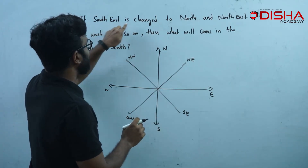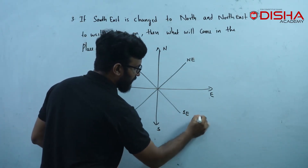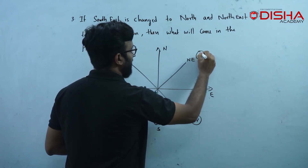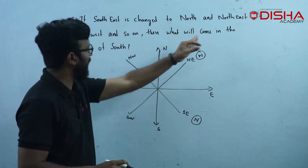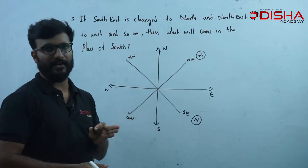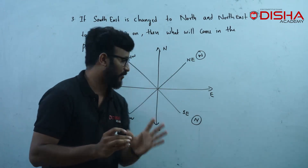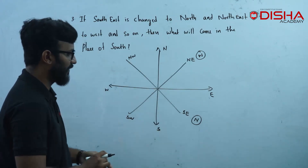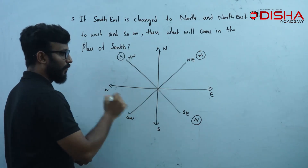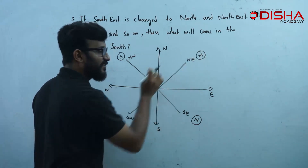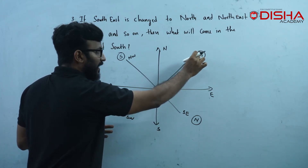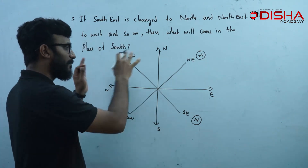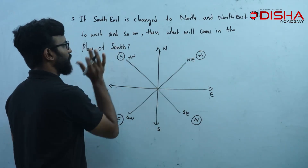Southeast is changed to North. Northeast is changed to West. What will come in the place of South? South is changed to North. Where is the opposite of North? South. Where is the opposite of West? East. So East is changed to North. What will come in the place of South?